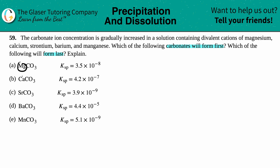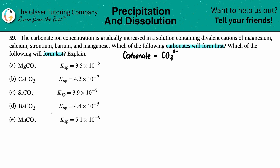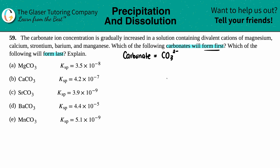For all of these, you only have one carbonate — CO₃²⁻. When you make the compound the 2-minus charge goes away, but we only have one carbonate for all of these, so we have the same number of ions produced for all of them. They all form two ions, so we can just look at the Ksp values.